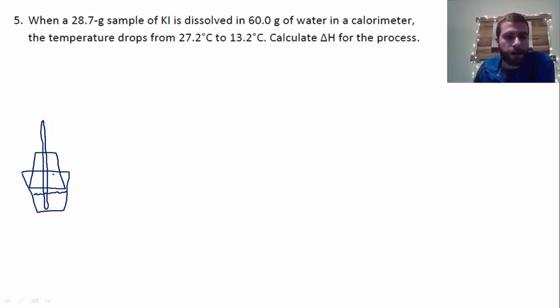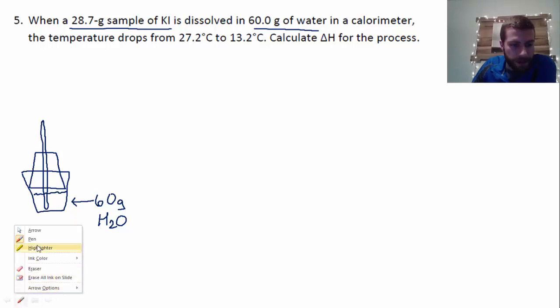And so in this scenario, let's look at our problem up above. They say we're going to take a 28.7 gram sample of KI and they're dissolving it in 60 grams of water. So the liquid part down here is the 60 grams of water. And then what they do is they take and put that KI right in there inside the calorimeter.